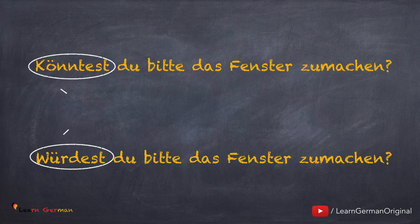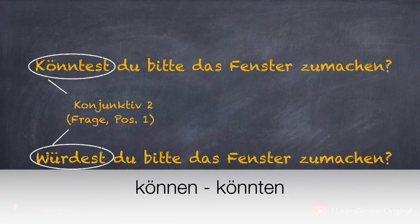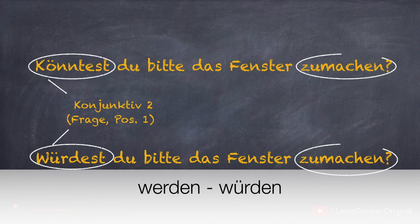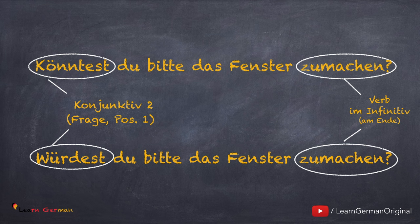In den beiden Sätzen kann man sehen, dass sie Fragen sind. Also das Verb steht in Position 1. Dieses Verb ist im Konjunktiv 2. In dem ersten Satz ist das Verb Können in Konjunktiv 2: Könnten, und in dem zweiten Satz ist das Verb Werden in Konjunktiv 2: Würden. Die anderen Verben stehen am Ende im Infinitiv.